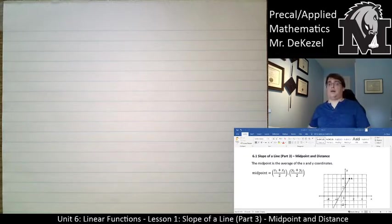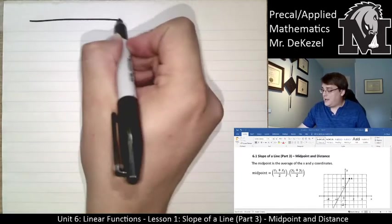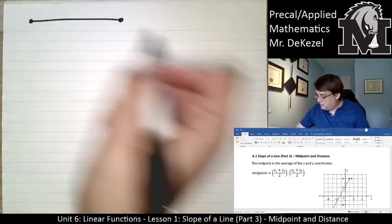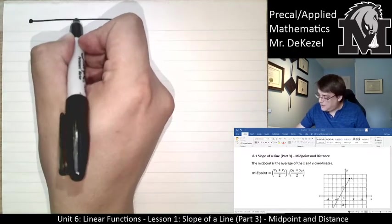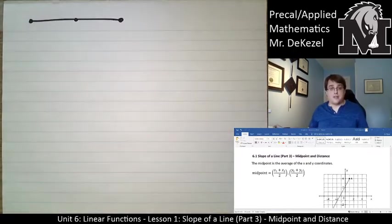So the midpoint of a line is the average of the x-coordinate and the average of the y-coordinate. It is essentially like halfway on a line, so we've got a point here and a point here. The midpoint would be like right there. It's the average between the two points.